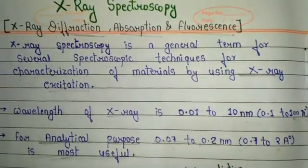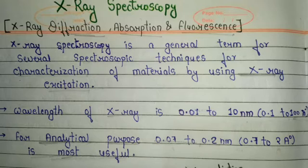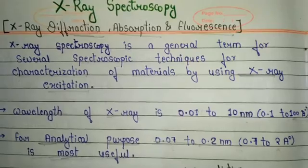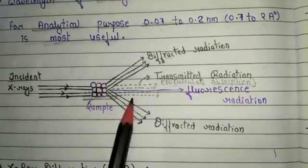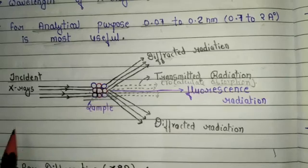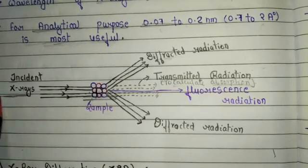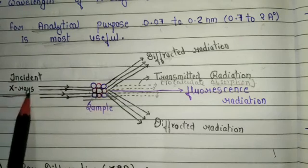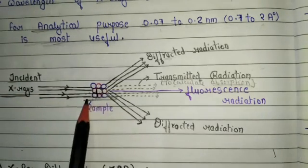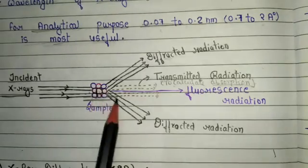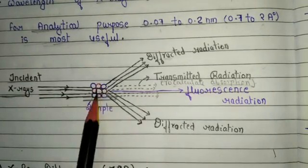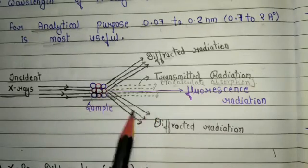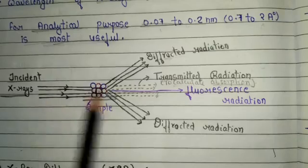Now we are going to discuss the diagrammatic representation of the mechanism of X-ray spectroscopy. In this diagram we discuss about the mechanism. Basically we use X-ray as a radiation source, and when incident X-ray strikes the sample — which has a certain crystal structure — three kinds of radiation are emitted.